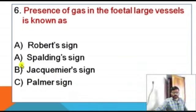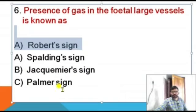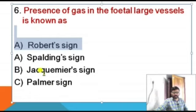The correct answer is Robert's sign. Presence of gas in the fetal large vessels is Robert's sign, seen usually 1–2 days after fetal death, presenting as a gas shadow within the heart or greater vessels. Spalding sign is overlapping of fetal skull bones caused by collapse of the fetal brain, seen 1–2 weeks after fetal death in utero.